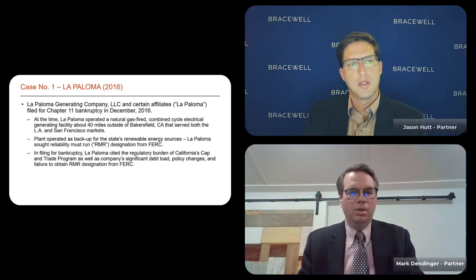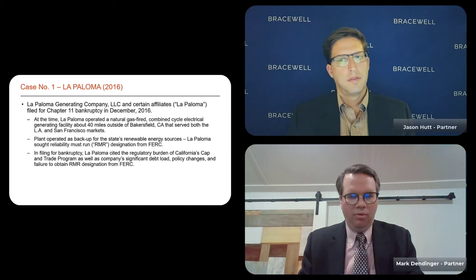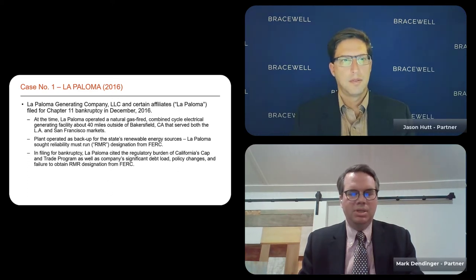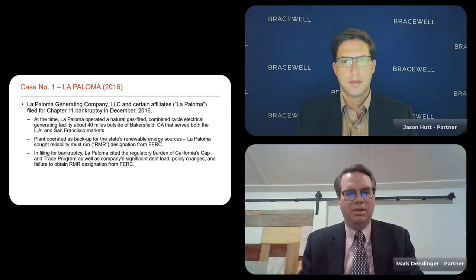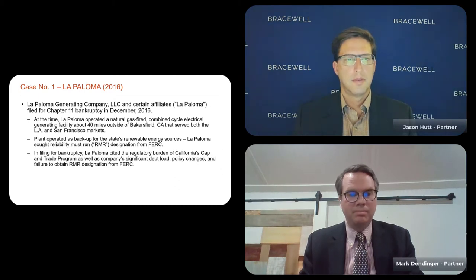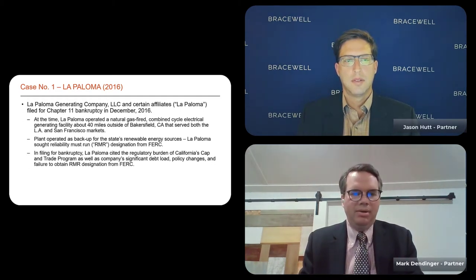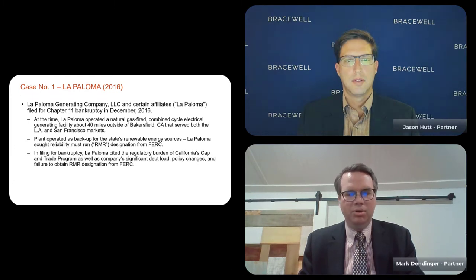La Paloma Generating Company was a power plant owning debtor. It owned and operated a natural gas-fired combined cycle facility in California, and it filed for bankruptcy in December of 2016 in Delaware. At the time it filed, it was suffering a liquidity crisis. It had gone to the Federal Energy Regulatory Commission to try to obtain a reliability must-run designation from FERC to forestall some of the liquidity issues. When FERC elected not to give that designation, coupled with regulatory burden under the California Cap and Trade Program, the company was pushed to file for Chapter 11.